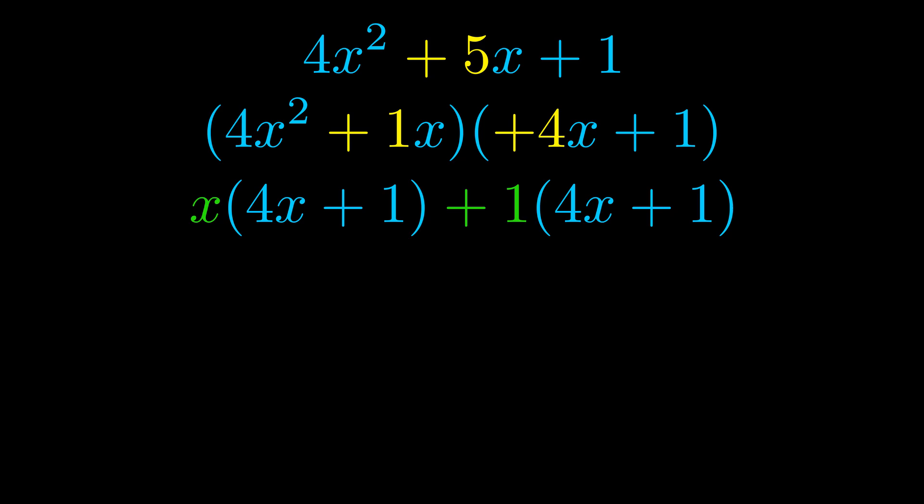Notice also how what remains inside of the parentheses is the same in both cases. The blue values are the same. Those blue values will become one of our factors and we will combine the two green values, the GCFs that we pulled out, to get the other one. And that is our fully factored equation.